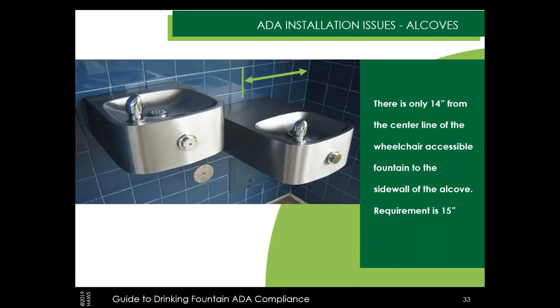Here's another example showing a high-low configuration with four-inch tile behind the fountains. The centerline of the low side fountain to the wall gives us only 14 inches, meaning only 29 inches of clearance — enough to make this a very difficult approach. They may not have considered the thickness of the tile when finishing the alcove. These could be moved to bring them back into compliance, unless they want them centered, in which case the alcove would need to be redesigned.